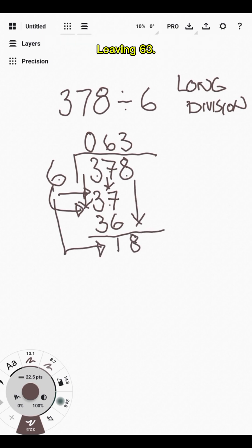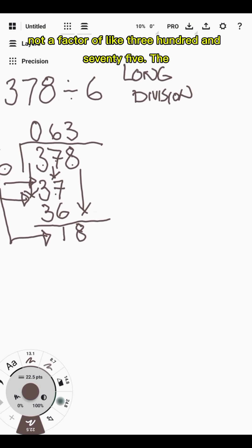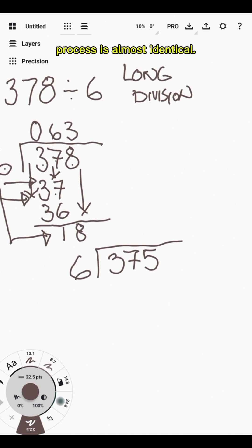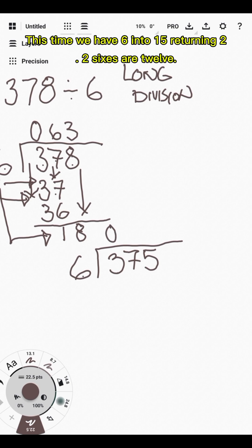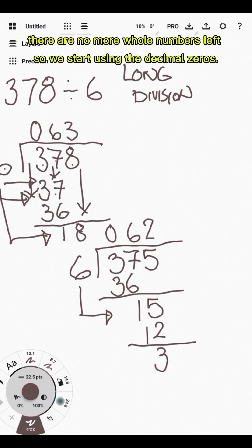Leaving 63. If we find a number that 6 is not a factor of, like 375, the process is almost identical. This time we have 6 into 15, returning 2. Two 6s are 12. 15 minus 12 equals 3. There are no more whole numbers left, so we start using the decimal zeros.